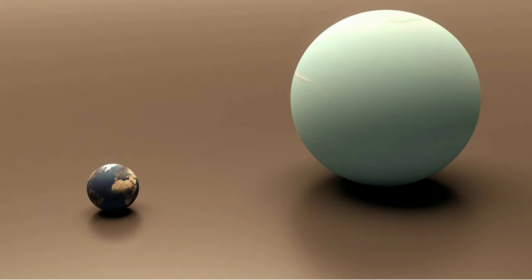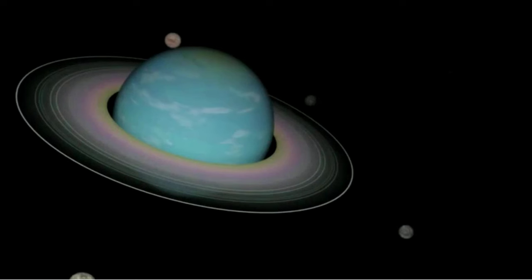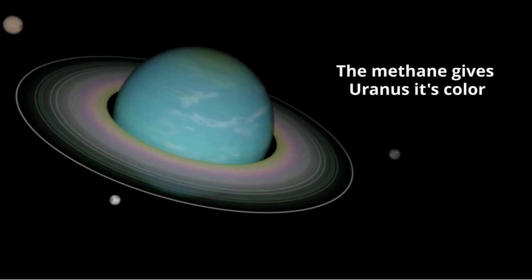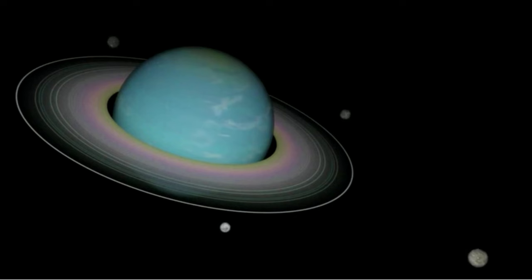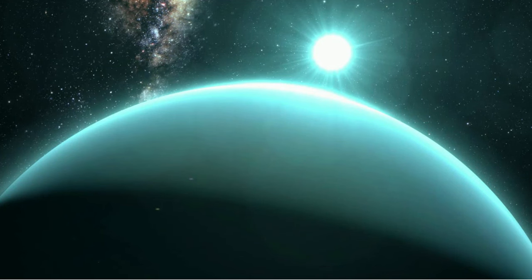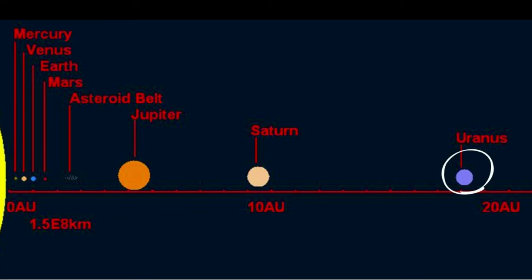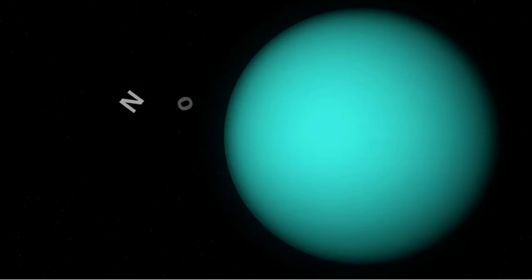Uranus is roughly 4 times the size of the Earth. It does not have a solid surface; however, it does have very cold surface temperatures of minus 353 degrees Fahrenheit. It consists mainly of clouds made of ice crystals of water, methane, and some ammonia, and it does have a small solid core. Its atmosphere is made up roughly of 80% hydrogen, 15% helium, and 2% methane. Uranus is 19.2 AU from the Sun, and there is no life.